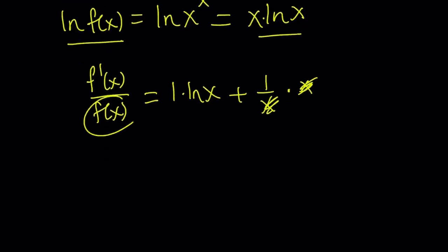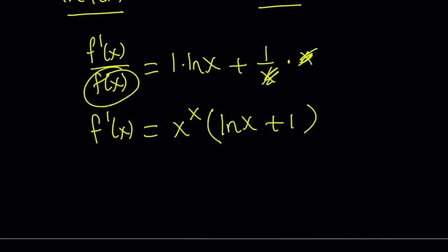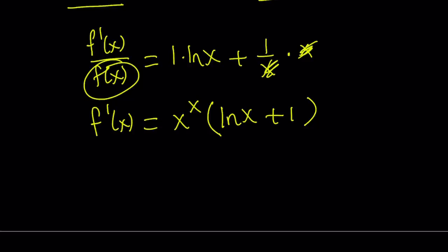And since f of x is x to the power x, if you cross multiply, put it on the right-hand side, you get the following. There are also some formulas and shortcuts for these kinds of things, but I wouldn't memorize them. So, just ln both sides and differentiate.